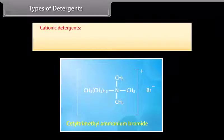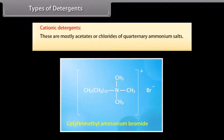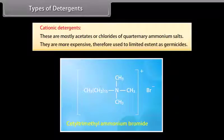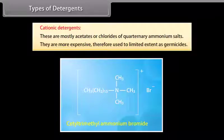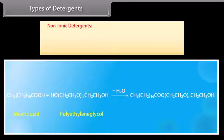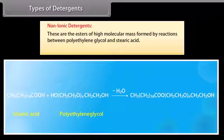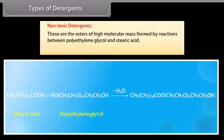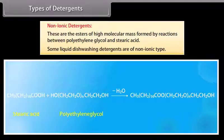Cationic detergents: these are mostly acetates or chlorides of quaternary ammonium salts. They are more expensive and therefore used to a limited extent as germicides. For example, cetyltrimethylammonium bromide. Non-ionic detergents: these are esters of high molecular mass formed by reactions between polyethylene glycol and stearic acid. Some liquid dishwashing detergents are of non-ionic type.